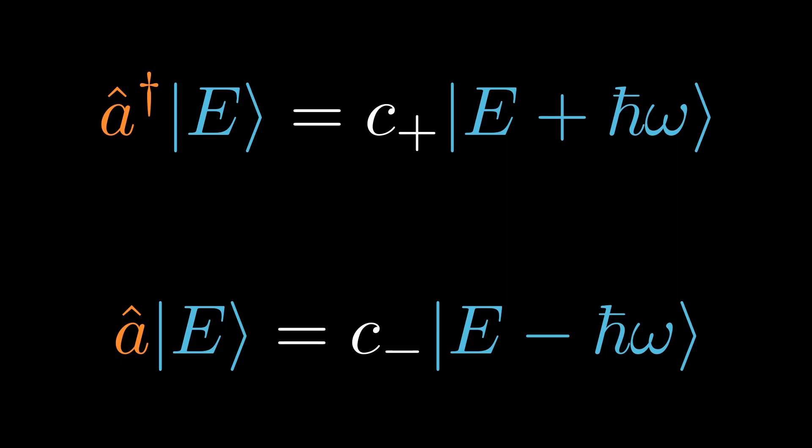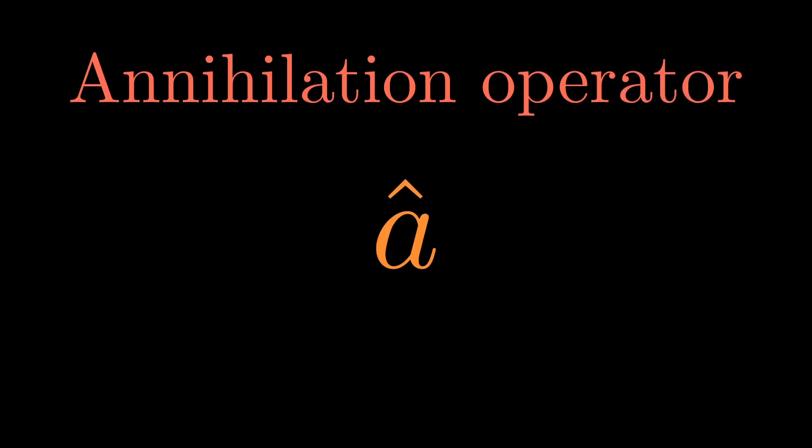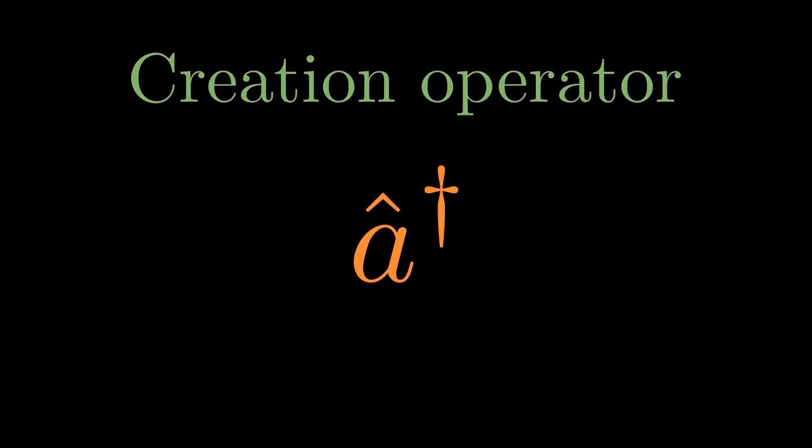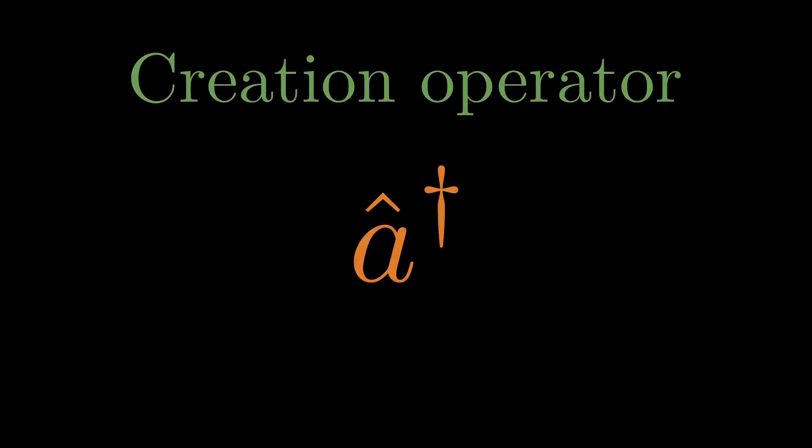So a† raises the energy by ℏω, and a lowers the energy by ℏω. The operator a is called the annihilation operator because it annihilates one excitation. In quantum field theory, annihilating an excitation is the same as annihilating a particle. a† is the creation operator — it creates an excitation, and in quantum field theory an excitation is a particle. Using the creation operator, we give the system more and more energy; each application adds ℏω. The annihilation operator does the opposite, removing ℏω of energy each time.